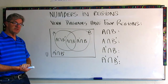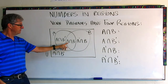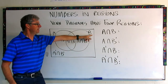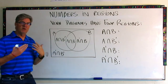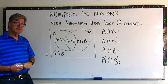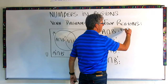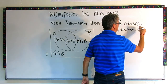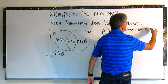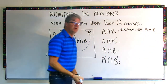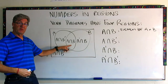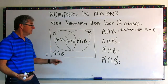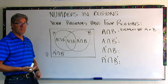Let's start with the region you're probably most familiar with. This is the intersection of set A and set B — A intersection B. That's the elements in both A and B. The elements that are in here have to be in both sets. The two circles overlap — that's the intersection of the circles — so all the elements that are in both show up there.